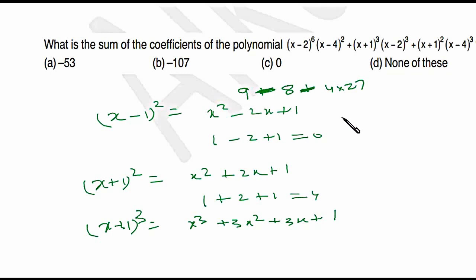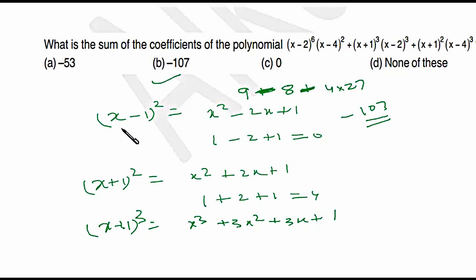That gives −9, so the result is 107 and it's negative. So by putting x = 1, you get the sum of coefficients very easily.